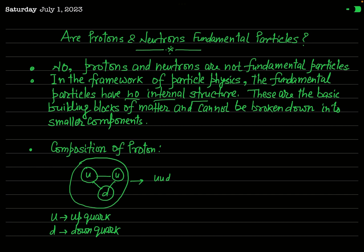If you think about the composition of a proton on the basis of quark theory, when scientists looked into the internal structure of the proton, they found that the proton is composed of three quarks — two up quarks, denoted by U and U, and one down quark. So the proton is composed of two up quarks and one down quark, symbolically represented as UUD.